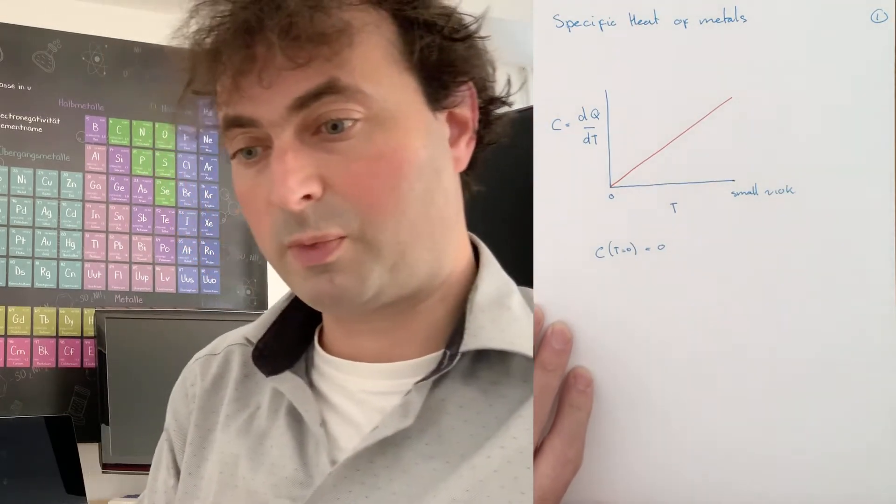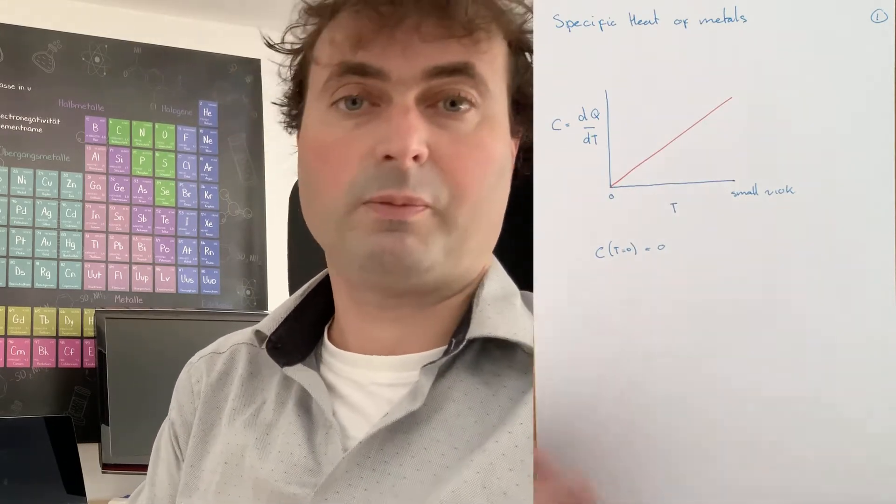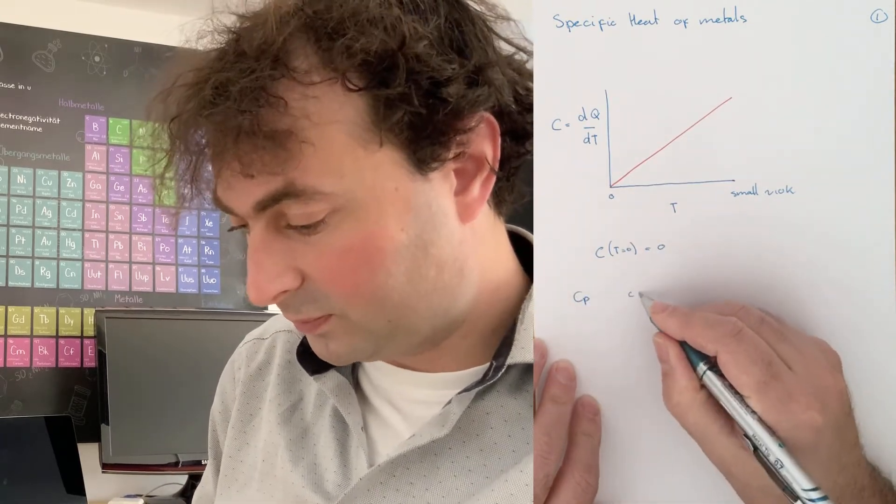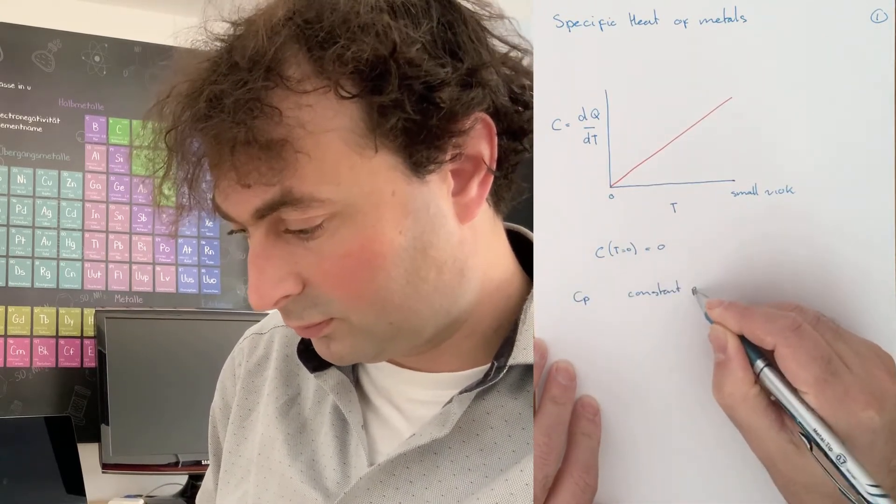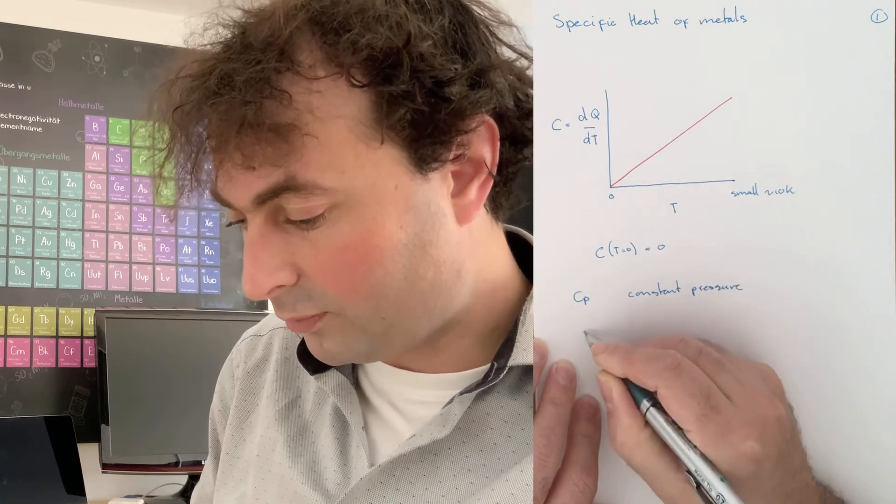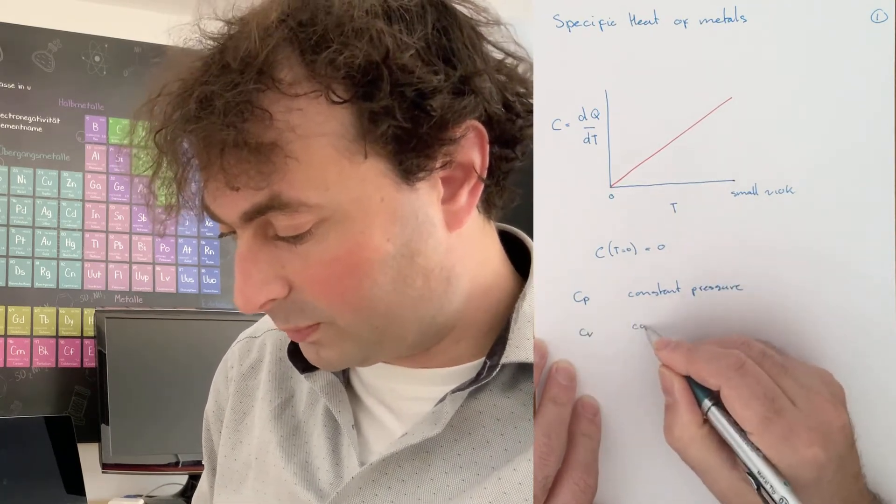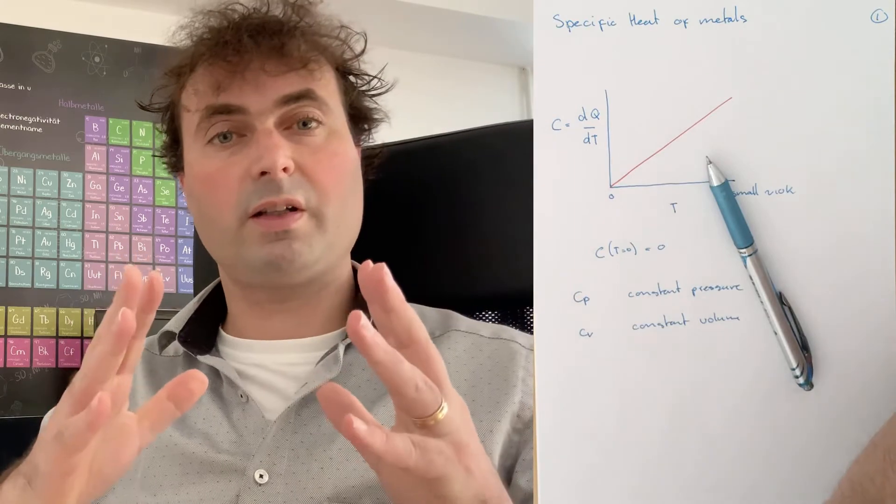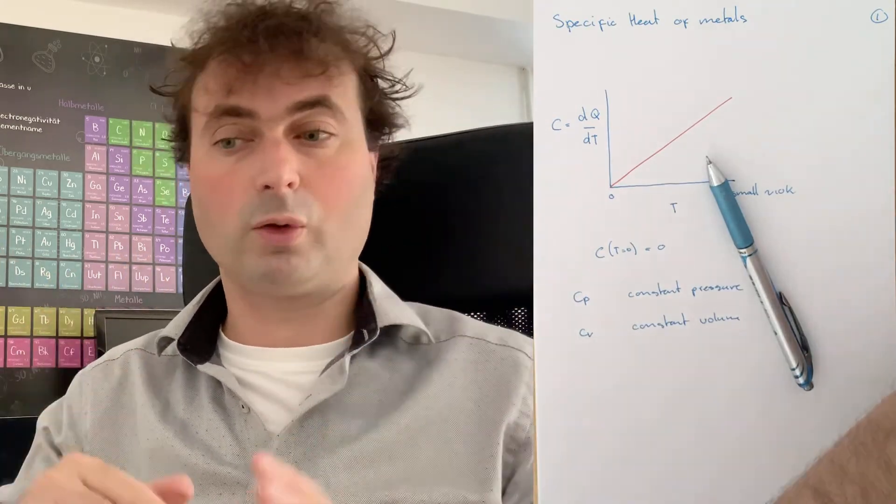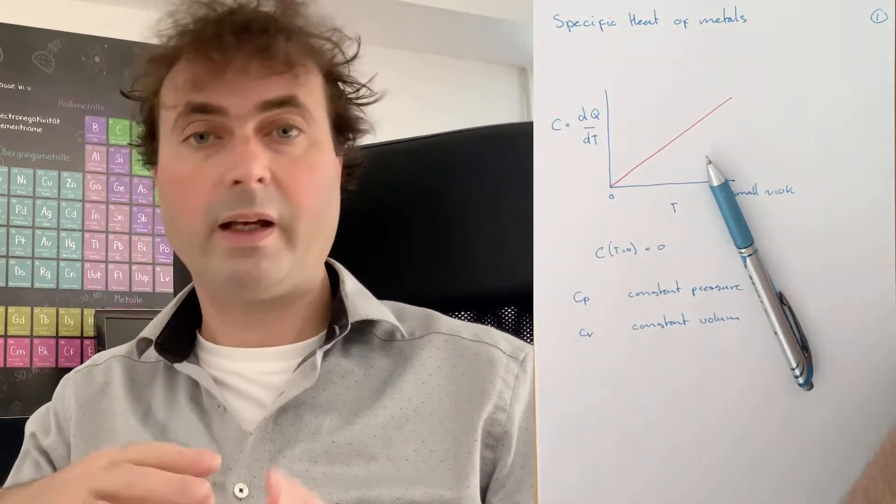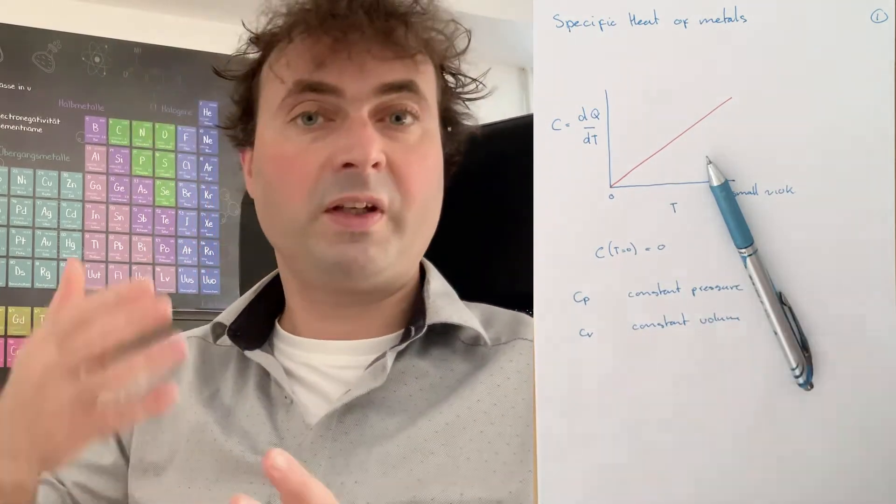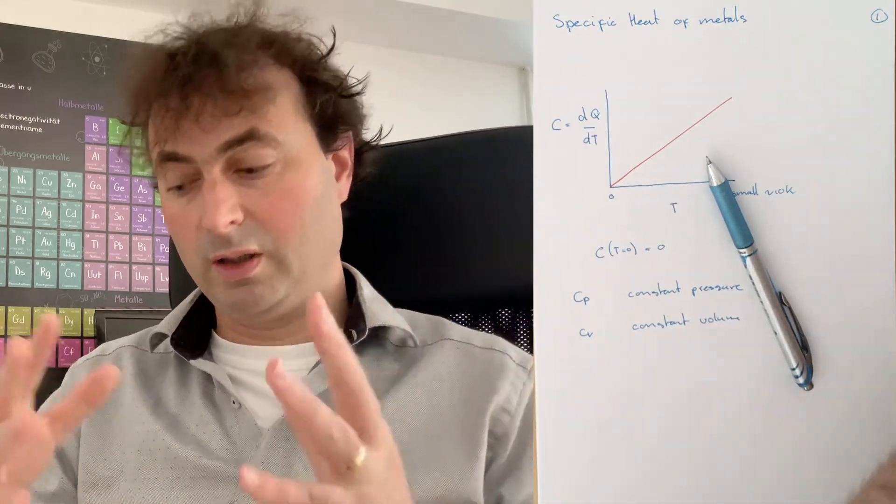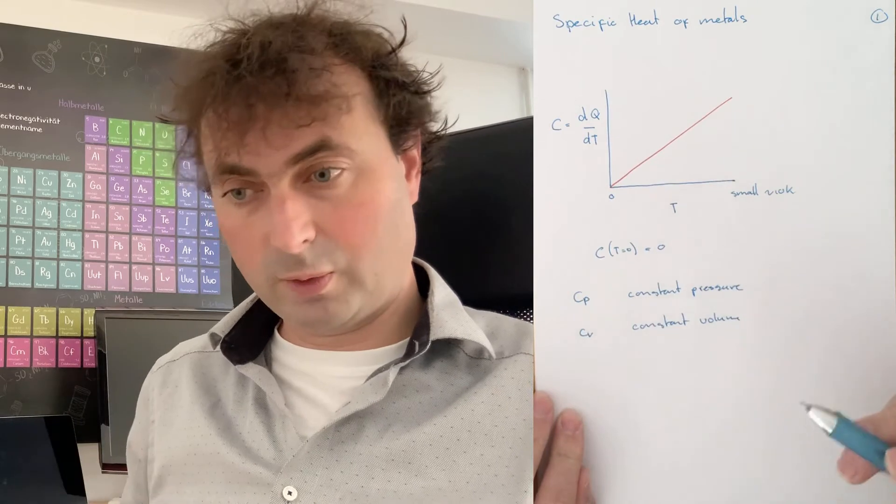Now we can measure the specific heat or calculate the specific heat in two different ways. This is either at constant pressure or at constant volume. At constant pressure the sample becomes larger when you heat or smaller when you cool. The specific heat is only accounting for the energy that is converted into the work that your sample does.